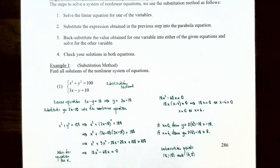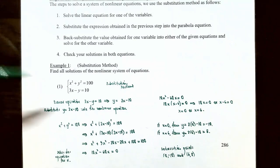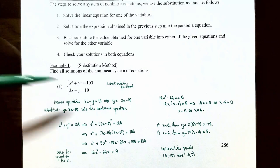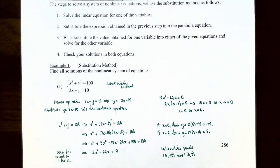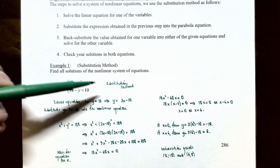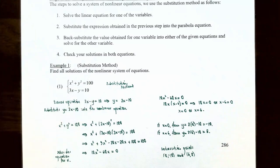Example one uses the substitution method to find all solutions of a non-linear system. The system is: x² + y² = 100 and 3x − y = 10. Notice that 3x − y = 10 is a linear equation, while x² + y² = 100 is non-linear because x and y are both raised to powers not equal to one. We'll use the substitution method to solve this system.